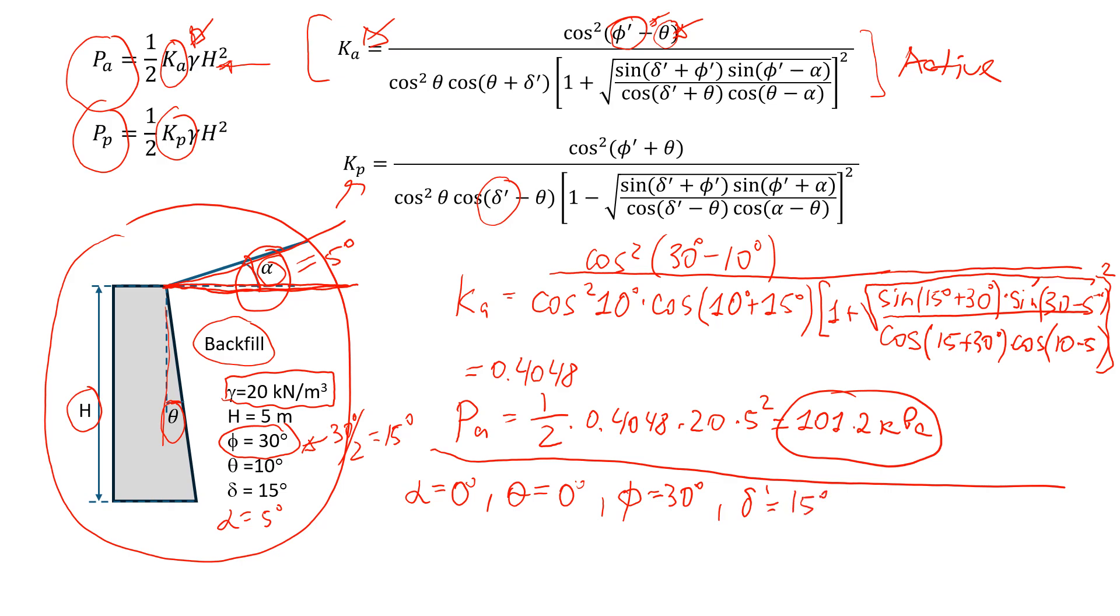So I already did the calculations. What you do now is use this formula to estimate the value of Kp, which is the coefficient of passive pressure. I already put everything in Excel and did the calculations. So just want to share the answer with you, which is 4.977.